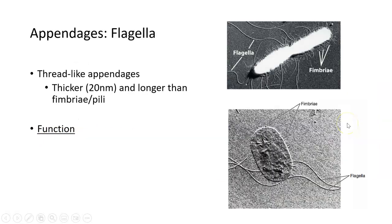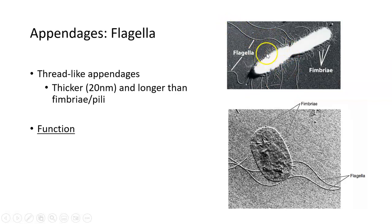Pili are much shorter and thinner than the other appendage we're going to discuss, which are flagella. Here you can see a flagellum — it's much longer and a little bit thicker than the fimbria on this bacteria. You can actually see several flagella on the bacterial cell at the bottom. These flagella are thread-like appendages that are much longer and thicker than pili or fimbria, and their main function — really only function — is in motility or movement of the bacteria.